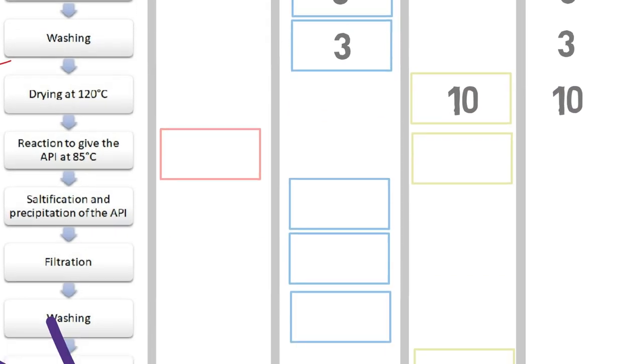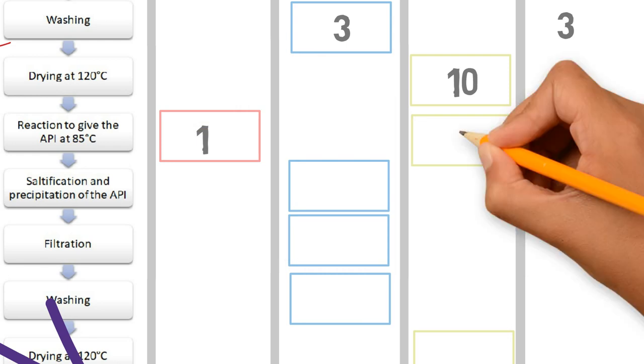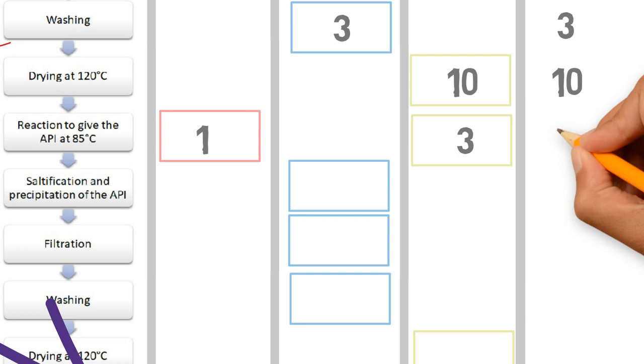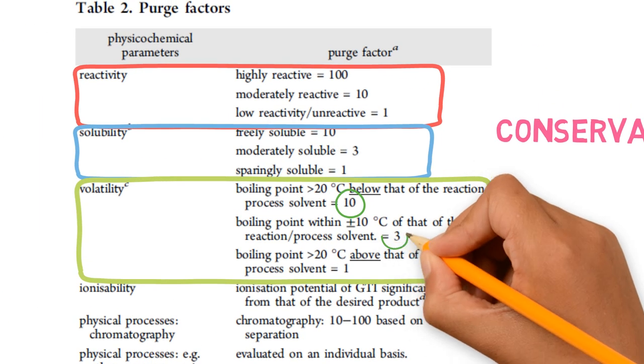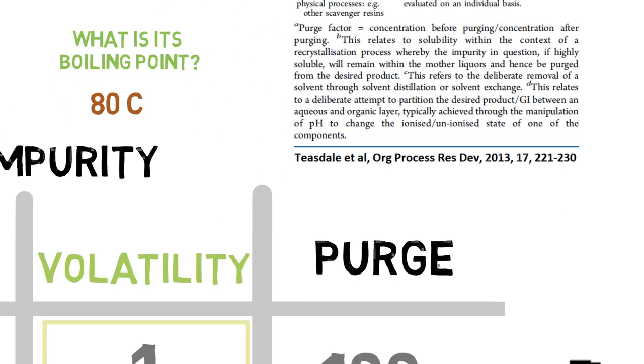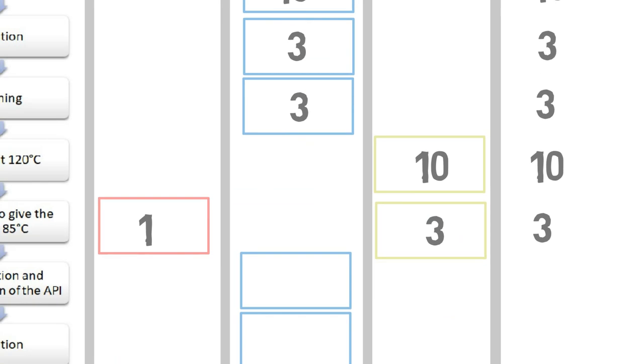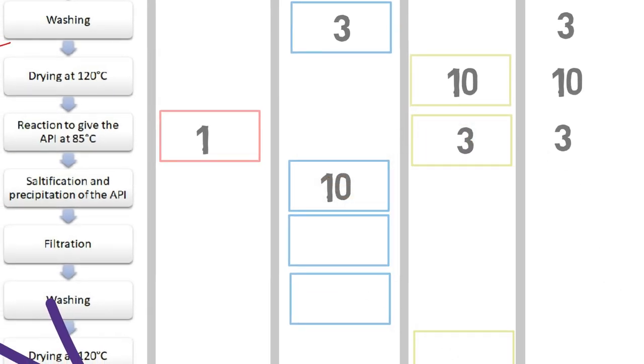The next one may be a reaction where the alkyl halide is not reactive. However, it will volatilize a little in the temperature of 85 degrees, which is 5 degrees higher than its boiling point, so the volatility factor is 3. In the precipitation stage, the impurity cannot generate its salt form, so it is not precipitated. Hence, this stage separates the API from the impurity and a solubility factor of 10 is given.